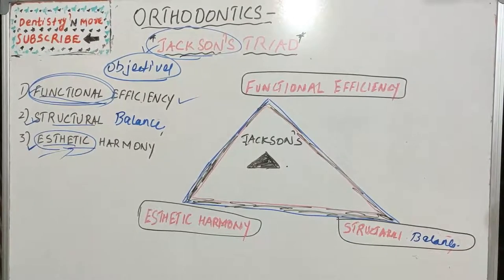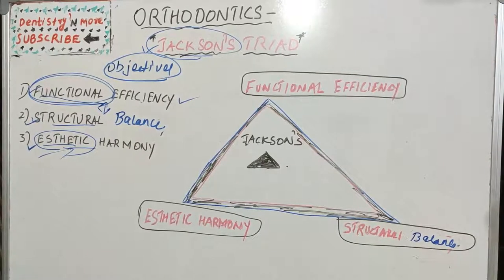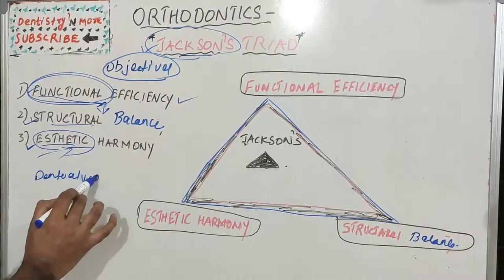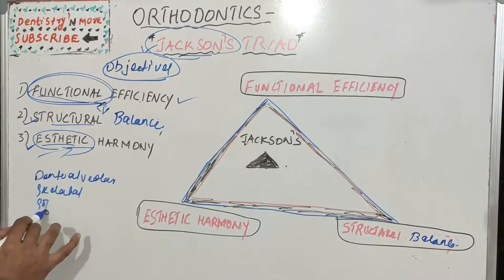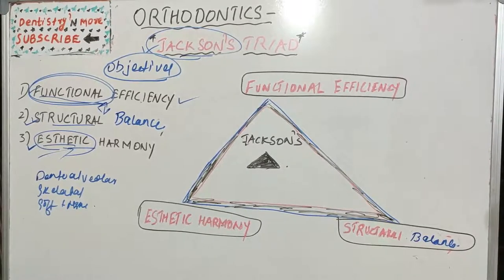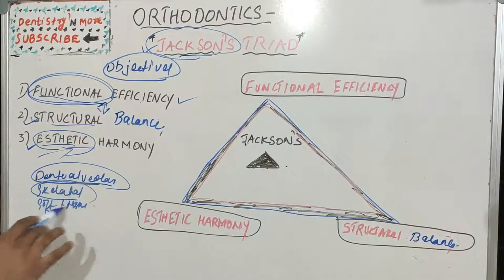The second objective is structural balance. It is somewhat similar to functional efficiency but is more at an anatomical level. We have three systems in the orofacial region: the dento-alveolar system (tooth-related), the skeletal system (bone-related), and the soft tissues. There should be harmony between these three systems.